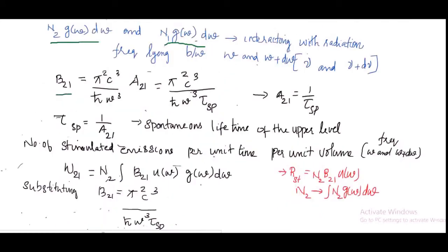We have already derived the expression B₂₁ = π²c³ / (ℏω³ · A₂₁). This can also be written as π²c³ / (ℏω³ · τsp), where A₂₁ = 1/τsp. Here τsp = 1/A₂₁ represents the spontaneous lifetime of the upper level.